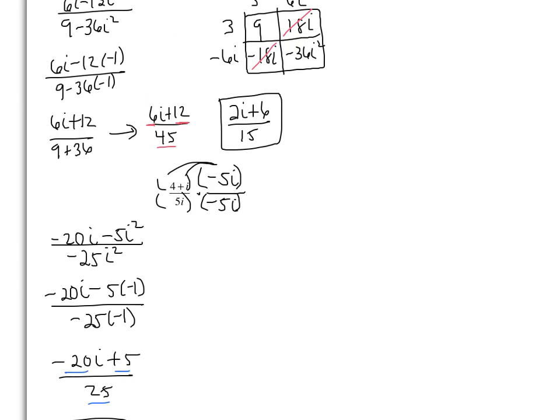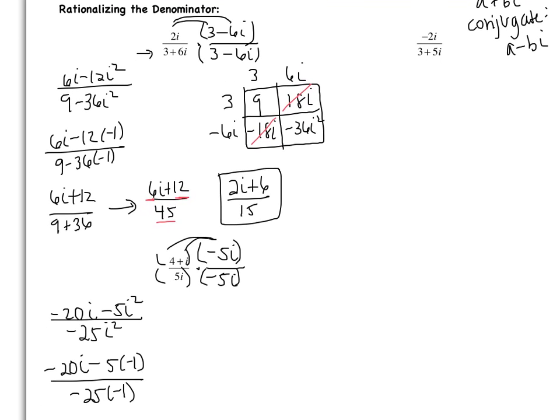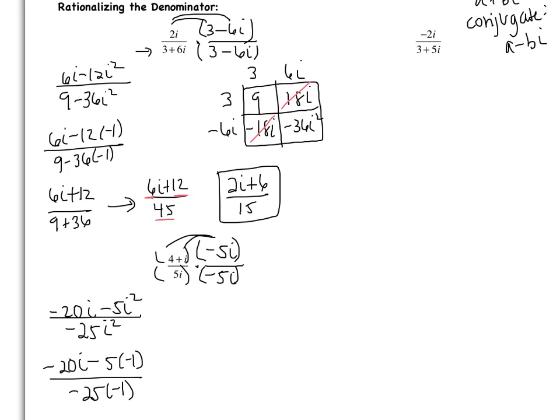Let's go back up to example 2. I'm going to have you all try this one. You need to rationalize the denominator. Remember that your first step is to multiply by the conjugate — so change the positive to a negative — and then simplify. Good luck.